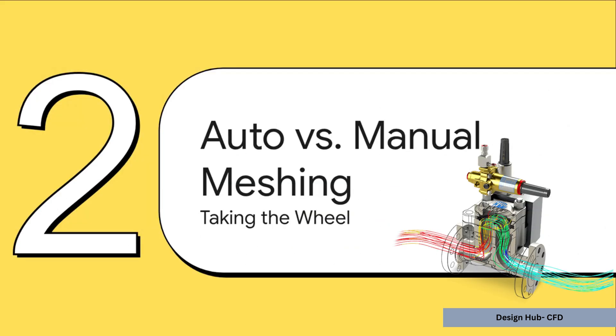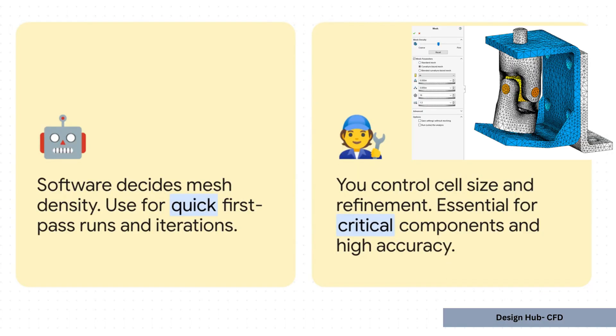And that brings us to the first really big choice you have to make every time you set up a study. Are you going to let the software do the driving with automatic meshing? Or are you going to grab the steering wheel and take full control with a manual mesh? Look, automatic mesh is fantastic for getting a quick first look. It's fast, it gives you a ballpark idea of the flow, and it's perfect for early design checks.